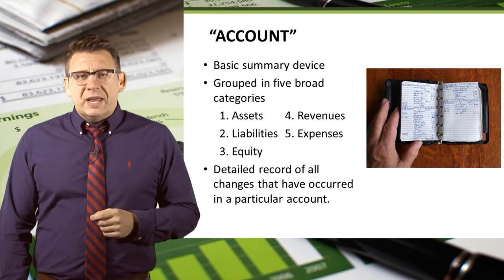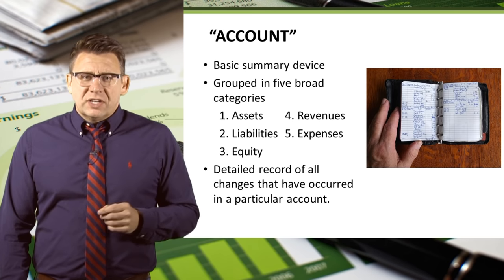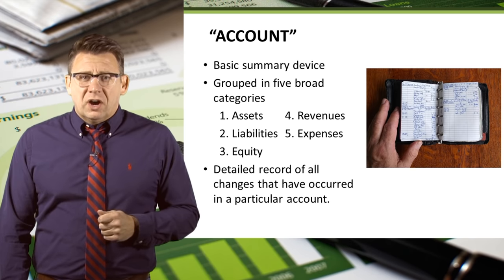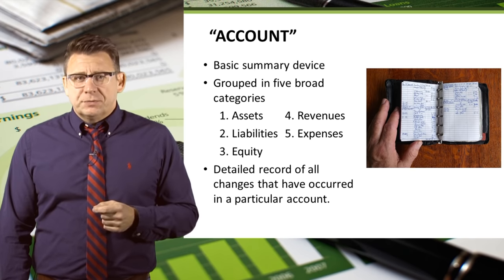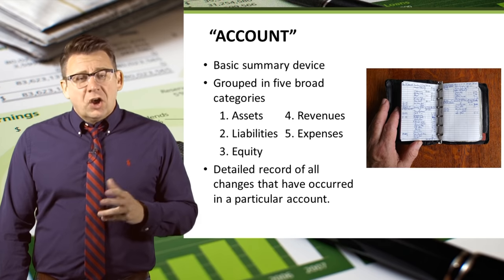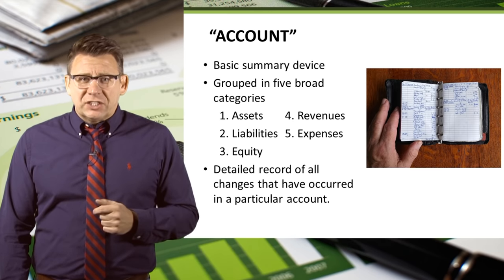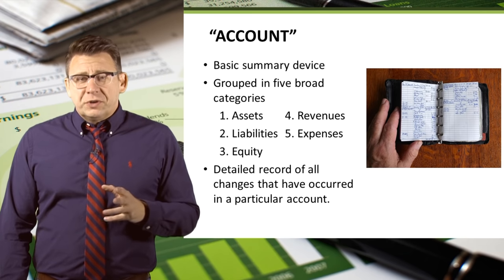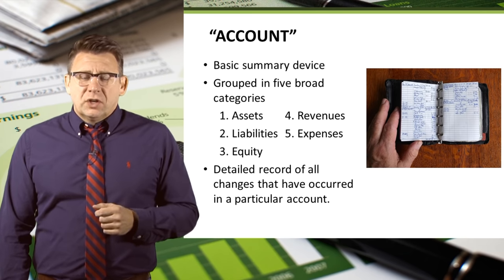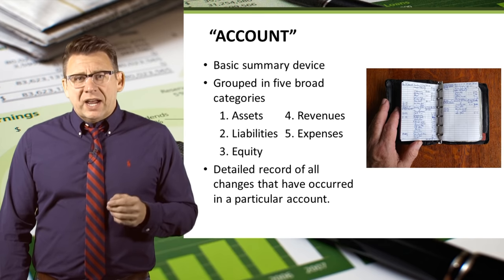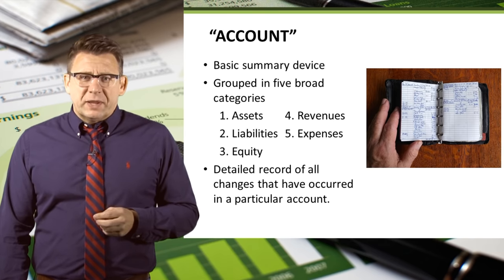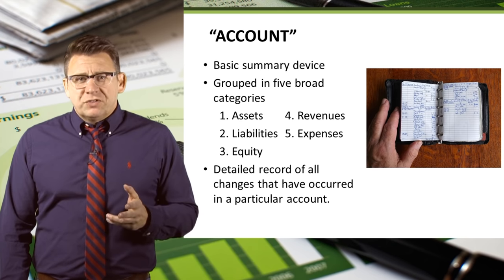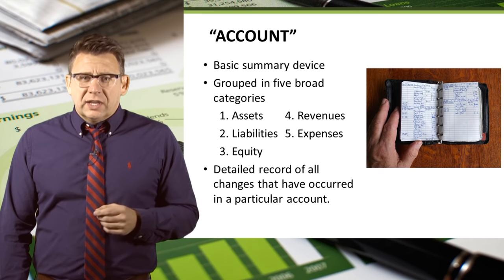An account is a basic summary device used in accounting. All of the related transactions to a particular account are recorded in that account. For example, all of the transactions affecting cash would be recorded in the cash account. Accounts are grouped into five broad categories, which include assets, liabilities, equity, revenues, and expenses. We will learn how financial data moves from the journal into the account later.